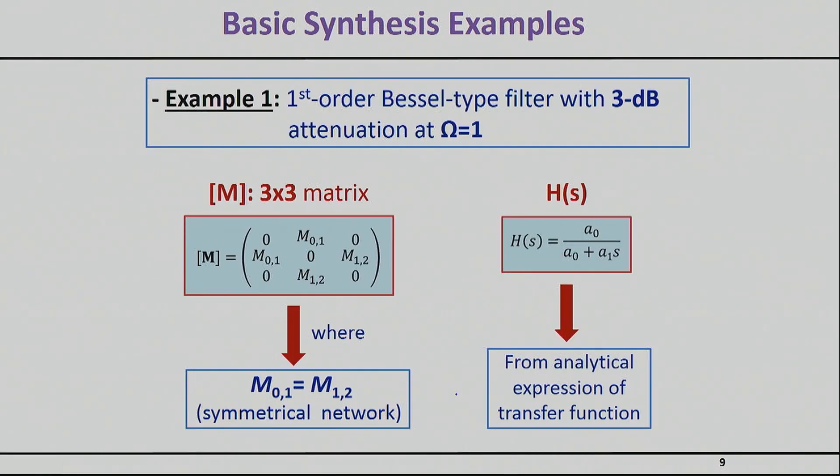So let's say that we wanted to do a first order, so single resonator, Bessel type filter with a 3dB attenuation at omega is equal to 1. So synthesizing basically at the normalized domain, so that's why omega is equal to 1. Now we have a first order filter and that means that our coupling matrix will be 3 by 3. Remember, you have one row and one column for the source and the load, and so that means that always your coupling matrix will basically be n plus 2 times n plus 2, where n is the basically number of resonators.